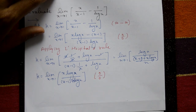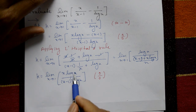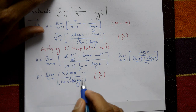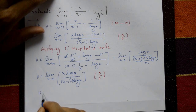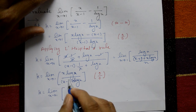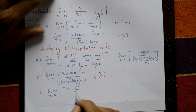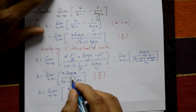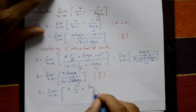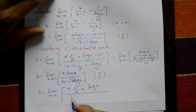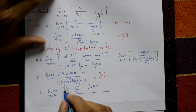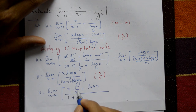Taking x = 1 in this expression: numerator gives 1·log 1 = 0, and denominator gives (1-1) + 1·log 1 = 0. So again 0/0 form. We need to differentiate once more.